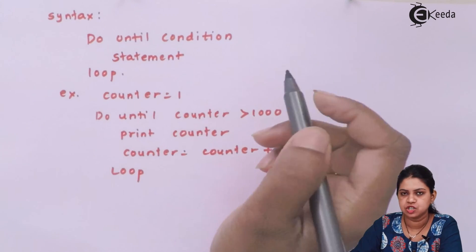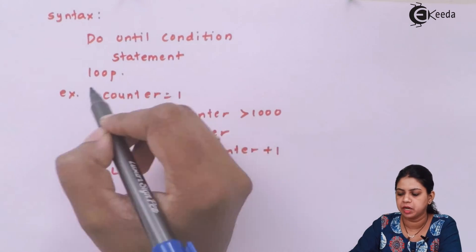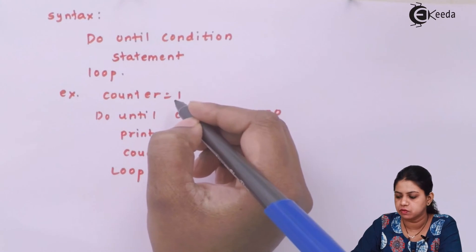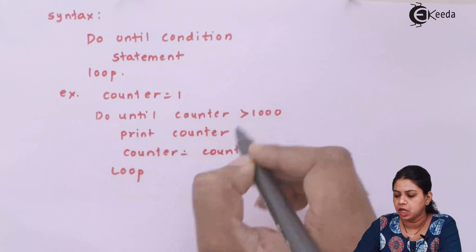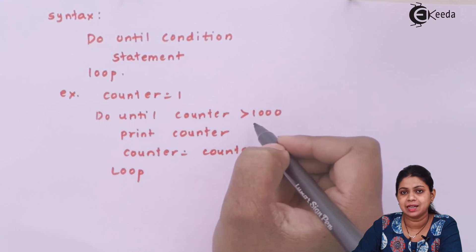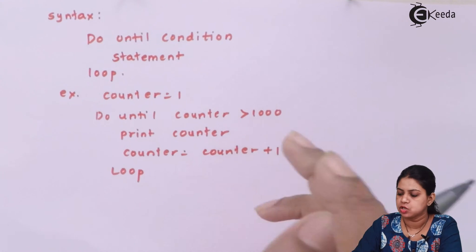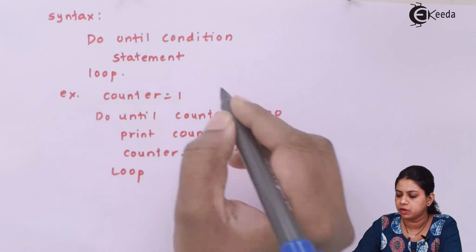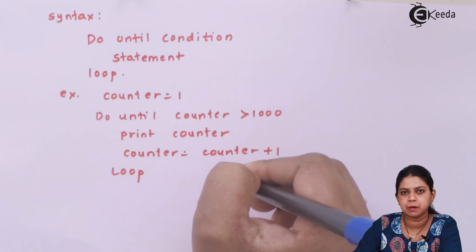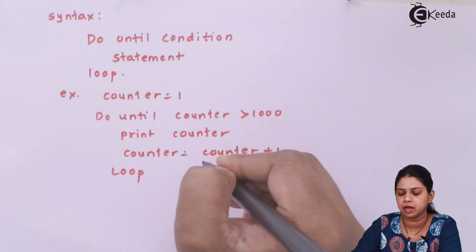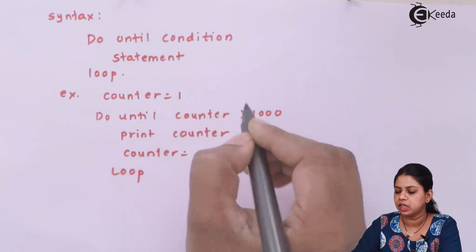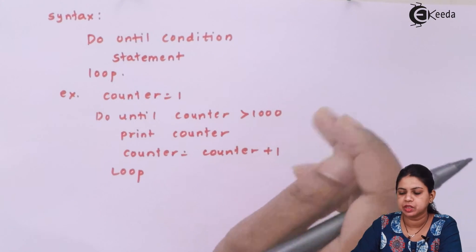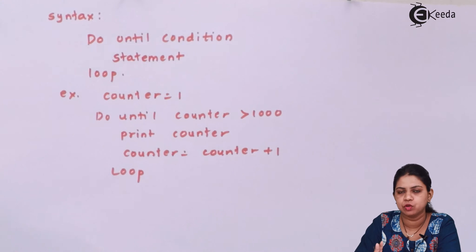Next is Do-Until. The syntax is: Do Until condition, statement, Loop. For example, counter starts at one and you increment it until counter becomes greater than 1000, printing counter each iteration.